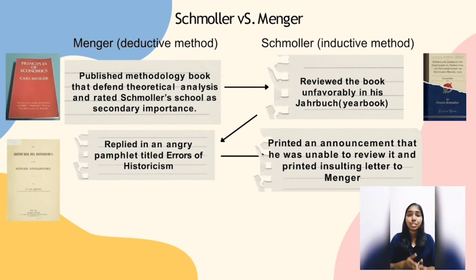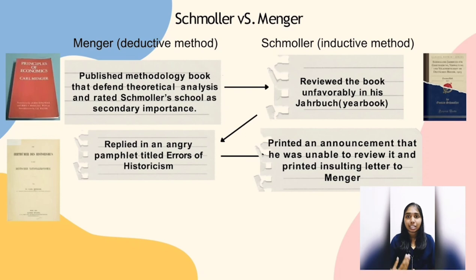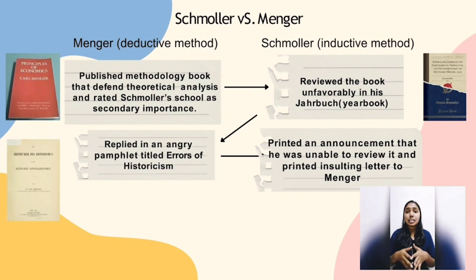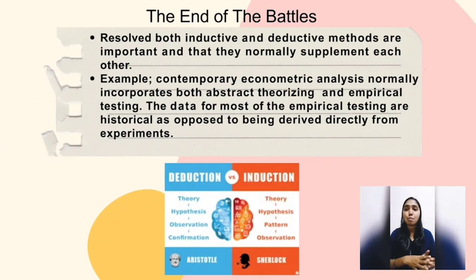Schmoller reviewed Menger's book unfavorably in his journal, Schmoller's Yearbook. Menger replied in an angry pamphlet titled Errors of Historicism, in which he accused the historians of having stepped upon the territory of economics like foreign conquerors, forcing their language, customs, terminology, and methods, and fighting intolerantly every branch of the science. When Schmoller received a copy of Menger's pamphlet for review, he printed an announcement that he was unable to review it because he had returned it immediately to the author, and he also printed the explanatory letter he had included with the pamphlet. This controversy aroused bitter feelings and resulted in many polemics on both sides.